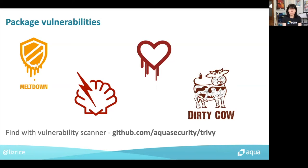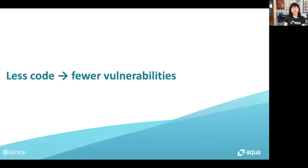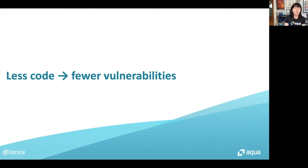One way to check your image for vulnerabilities is with a vulnerability scanner. I want to give a shout out for Trivy, which is an open source vulnerability scanner that my team works on. It's really high performance and it covers a lot of different base images and operating systems. Generally speaking, the smaller the amount of code you have, the less likely it is to contain vulnerabilities. If you have no packages in your container image at all, none of those known package-based vulnerabilities can exist.